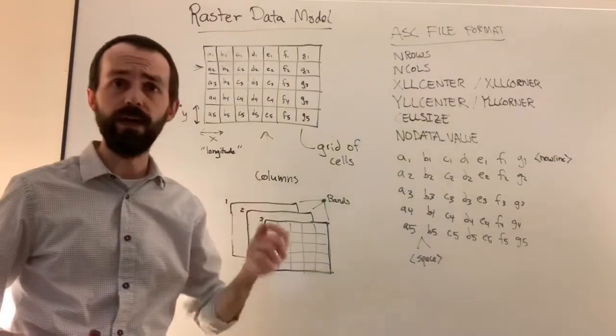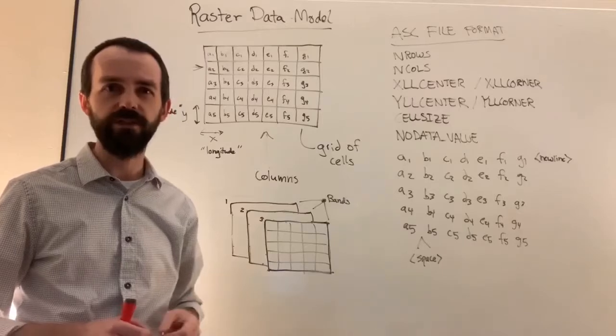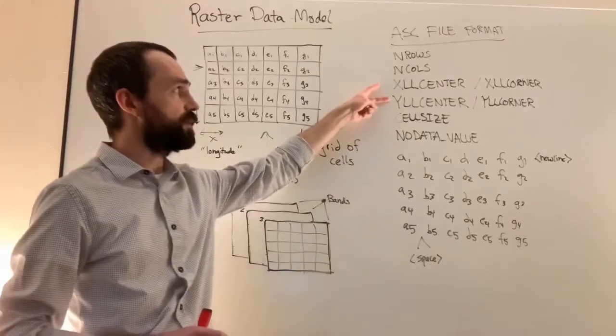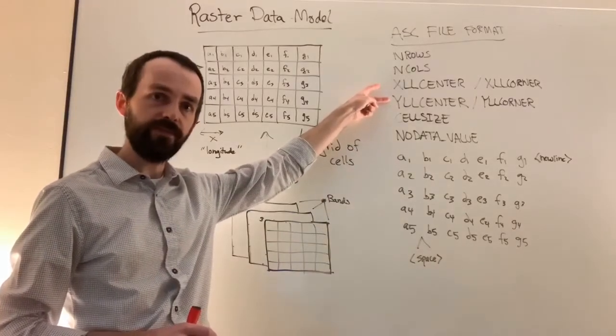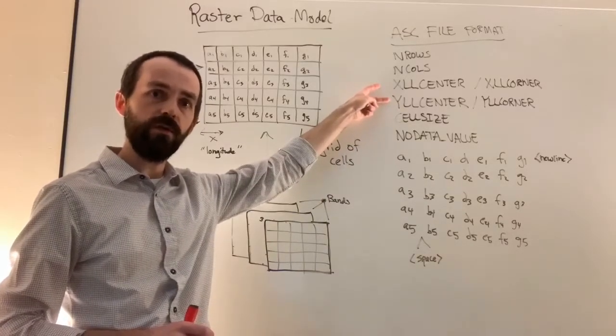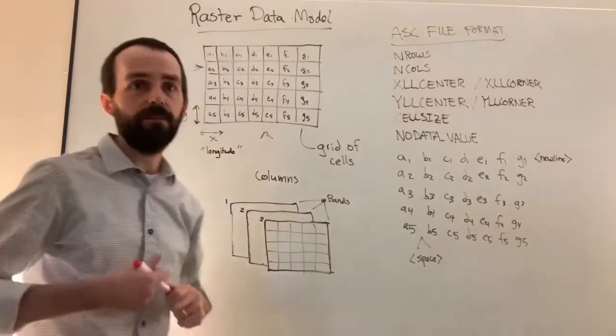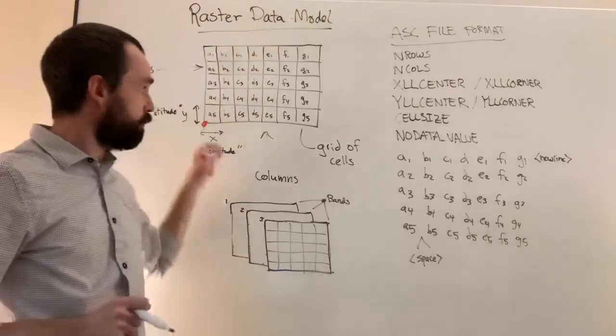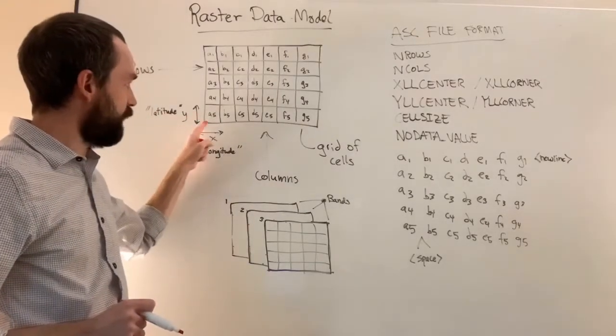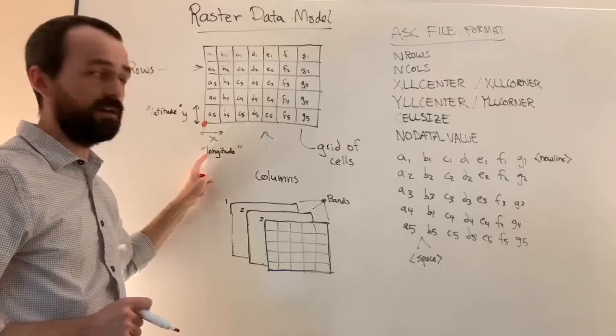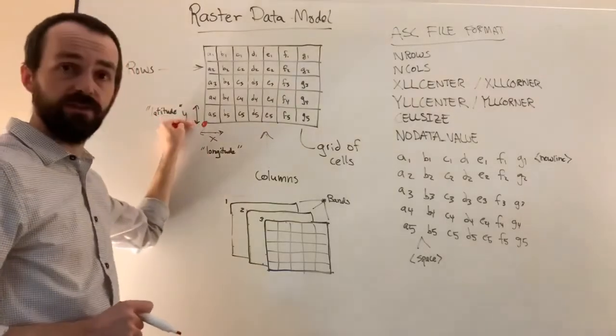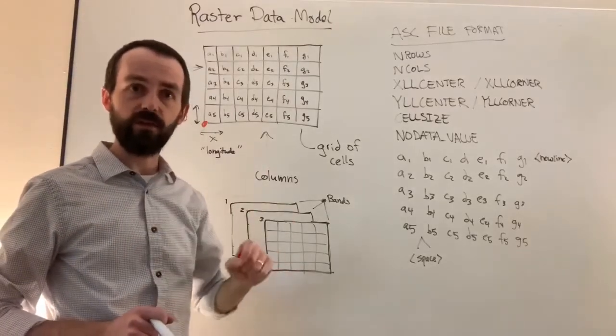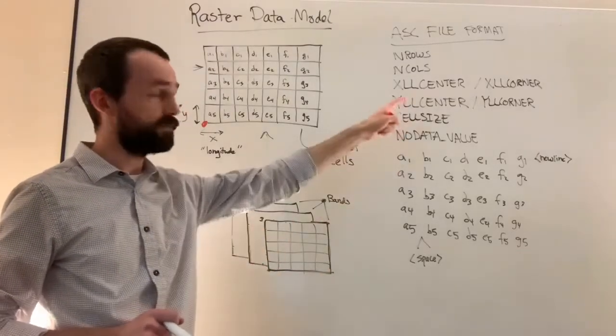So we have to point out where the first or where one of the origin cells is located. And in terms of the file format, we're just going to be looking at the lower left corner or the lower left center. And so we want to be able to say, is it the lower left corner? So right where the edge on the left-hand side of the X and right where the bottom edge of the Y is located, that would be our X lower left corner, Y lower left corner.